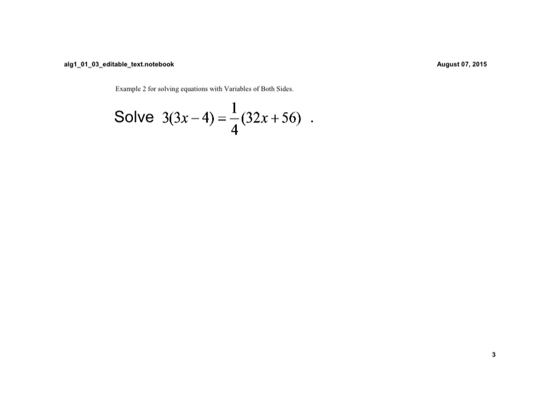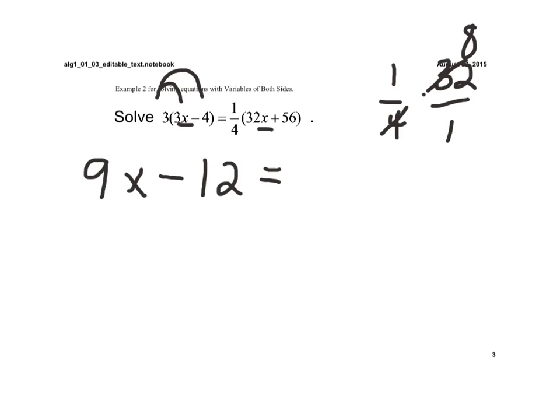Here is another one. Again, the main thing is that we have variables on both sides. Now, you see that there are parentheses. We learned the last couple days, if we have parentheses, we have to eliminate them by using the distributive property. On the left side, distribute the 3 to both those terms. 3 times 3x would be 9x, and 3 times minus 4 would be minus 12. Now I have to take 1 fourth times 32x. So 1 fourth times 32 over 1, if we cross-cancel, we get 8. So that becomes 8x plus, now I have 1 fourth times 56 over 1, and 4 goes into 56, 14 times. So then I have plus 14.